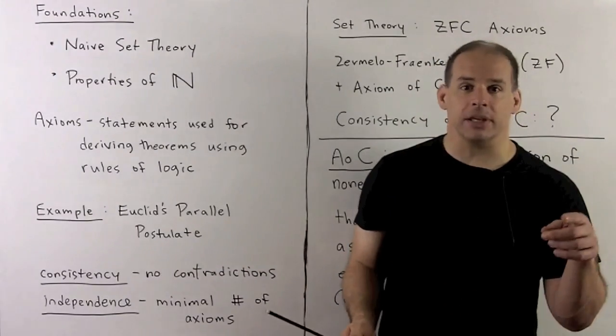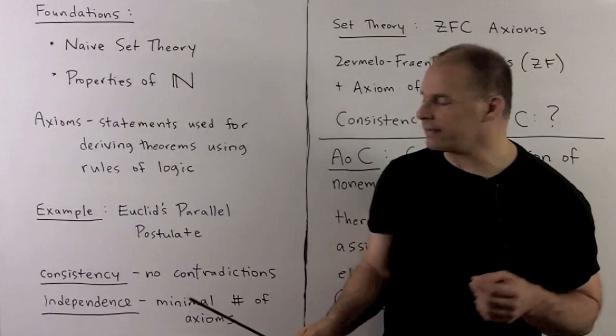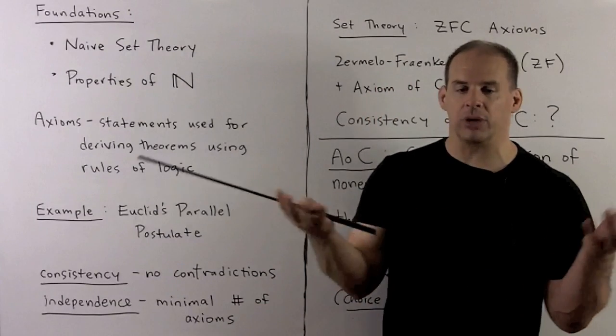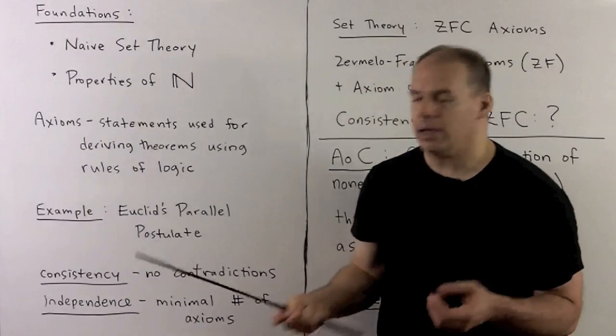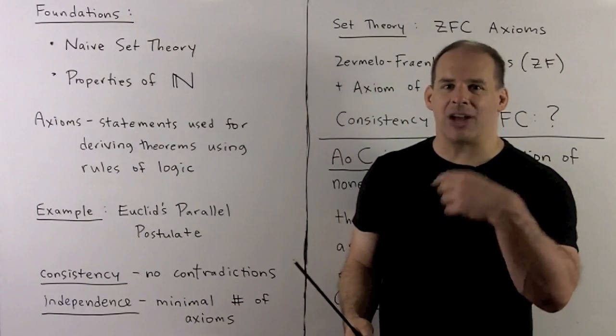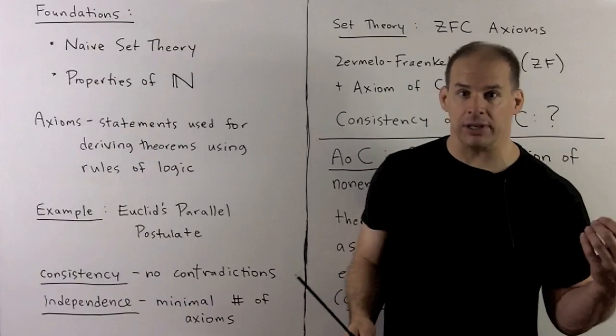For a collection of axioms, there are two properties we would like them to have. First, consistency, meaning the axioms do not contradict one another. And independence, meaning our set of axioms is as small as possible, so no axiom is actually a theorem from the remaining axioms.